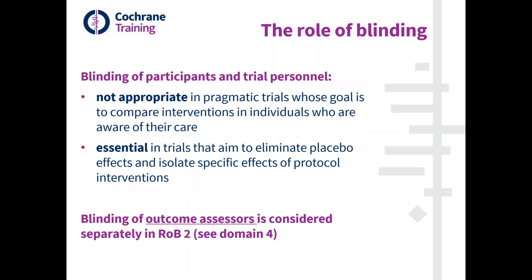Blinding of participants and trial personnel is a very important part of the conduct of randomized trials. However, it's not appropriate if we're conducting a pragmatic trial whose goal is to compare interventions in individuals who are aware of their care. On the other hand, blinding is essential in trials that aim to eliminate placebo effects and isolate specific effects of the protocol interventions. Blinding also has a very important role in ensuring that outcome assessment is not affected by knowledge of the intervention received — though that is considered separately in domain four of the ROB2 tool.